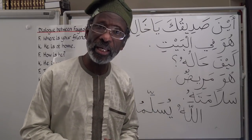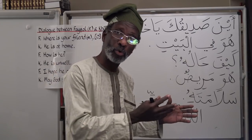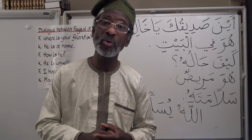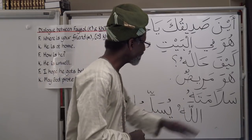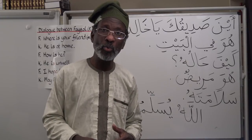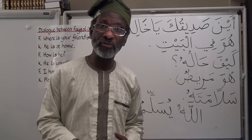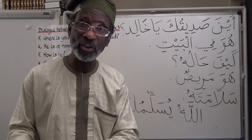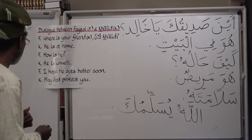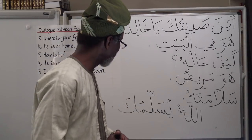'Huwa maridun' — he is unwell. Huwa means 'he is', maridun means unwell. If she is unwell: 'hiya maridatun.' I hope he gets better soon — 'salamatahu', equivalent to wishing a speedy recovery. If wishing that for a girl: 'salamataha', the 'hu' becomes 'ha.' Response: 'allahu yusallimuka' or 'yusallimuki' — may God protect you.